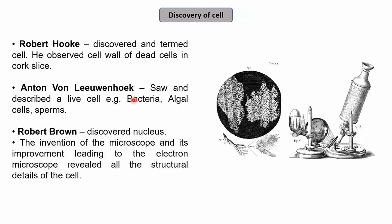The discovery of the cell dates back to Robert Hooke, who discovered and termed the structures he visualized as cells. He observed cell walls of dead cells in a cork slice and found a honeycomb-like structure, which he named 'cell.' After that, Anton van Leeuwenhoek saw and described living cells — for example bacteria, algal cells, sperms. He also visualized plaque of the tooth and observed living organisms, calling them cells.